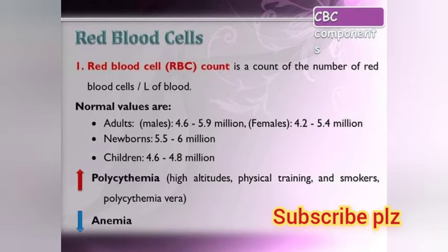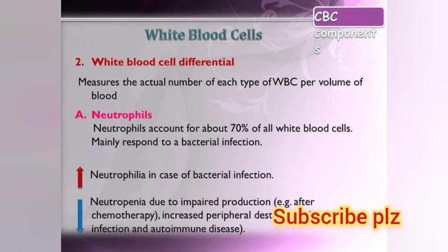White blood cells: the differential measures the actual number of each type of WBC per volume of blood. Neutrophils account for about 70% of all white blood cells and are mainly responsible for response to bacterial infection. An increase in neutrophils is called neutrophilia, seen in bacterial infection, while a decrease is known as neutropenia, due to impaired production such as after chemotherapy or increased peripheral destruction.